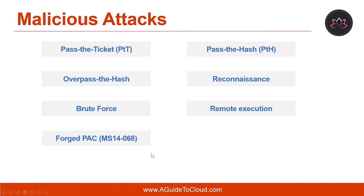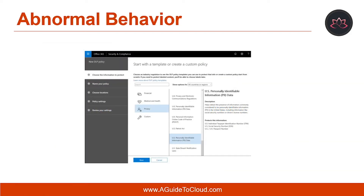Additional malicious attack types include forged pack, golden ticket, and malicious replications. Abnormal behavior is detected by ATA using behavioral analytics and leveraging machine learning to uncover questionable activities and abnormal behavior in users and devices in your network. This includes anomalous logins, unknown threats, password sharing, lateral movement, and modification of sensitive groups. You can view suspicious activity of this type in the ATA dashboard.